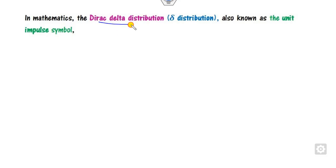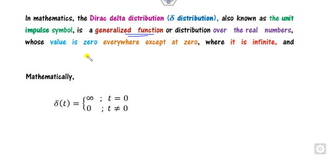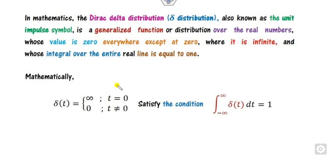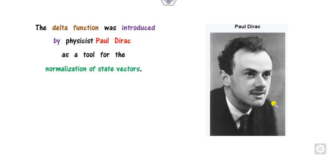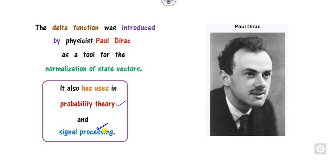In mathematics, the Dirac delta function is also called the delta distribution and is also known as the unit impulse function. It is defined as a generalized function over the real numbers whose value is 0 everywhere except at one point, where its value is infinity. Along with this, there is one more condition: the total area under the curve is 1.